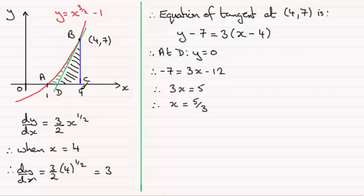And that now enables me to go on and find this length, DC, ready for working out the area of the triangle. Therefore, the length DC is going to equal 4 minus the x coordinate here, 5 thirds. 4 minus 5 thirds, that's 12 thirds for 4, take away 5 thirds. That's going to be 7 thirds.